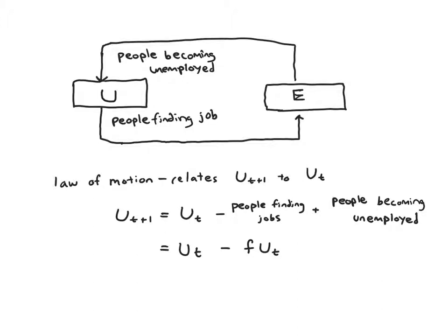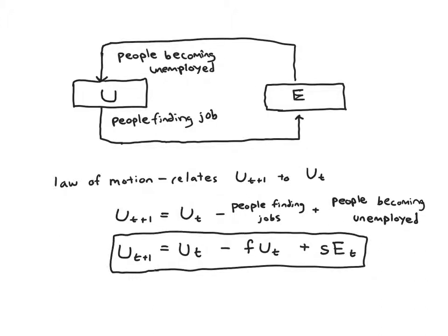Hopefully this fraction s is quite small - ideally that would be the case. But to make it simple, we'll just have some static fraction s. So plus s times the number of people employed, or Et. And this gives us our law of motion. So I'm going to fill in the Ut+1 and put a box around this because this is really the key equation in the model.